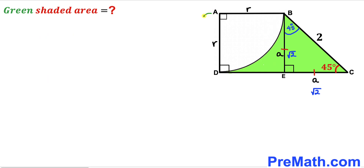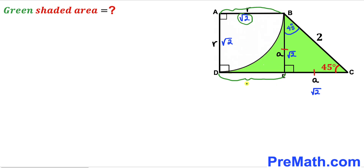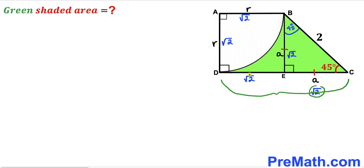Now let's make an observation. We can see that AD equals BE. Since BE = √2, AD = √2 as well. So our radius r = √2. Therefore AB, also equal to radius r, is √2 units. Furthermore, AB equals DE, so DE = √2 units as well. The whole length CD is the sum of EC and DE: √2 + √2 = 2√2 units.